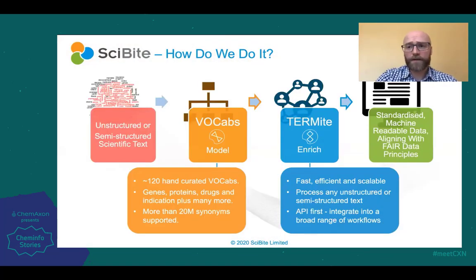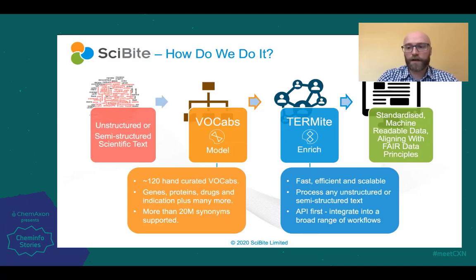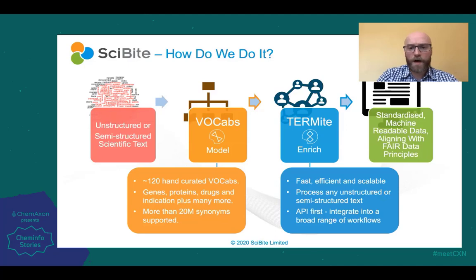We have a broad semantic software platform, and I'm just going to talk about two components of that here. Our Vocabs are hand-curated vocabularies — we have about 120 of these covering both biological and commercial concepts, things like genes and proteins, and we also have very broad synonym support for different ways of describing the same entity. Termite is our entity extraction and recognition engine. We take unstructured or semi-structured data, process it through this pipeline, and the output is standardized machine-readable data that aligns well to the FAIR data principles.